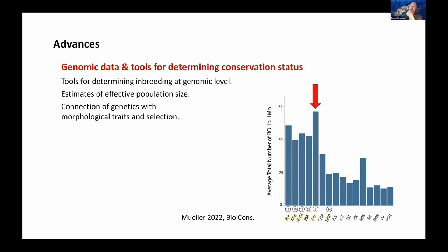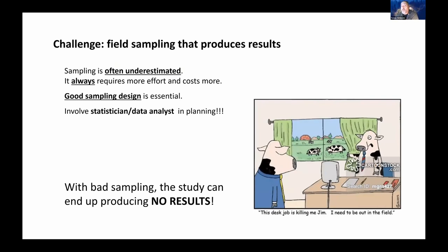Genomics is opening new options in many ways. The main challenge still remains field sampling — it is often underestimated and always requires more effort and costs more than we think. Involve a statistician in planning and really plan thoroughly. For a bear monitoring study we're doing now in Slovenia, total costs are about half a million euros even while sampling with volunteers, and about half of that cost is just organizing the field sampling. Don't underestimate it.